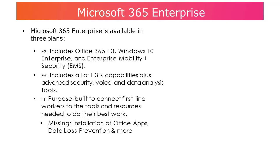The last plan is the F1, which is for first-line workers or field workers. These are users who usually do not spend their day in front of a computer and only use one when needed. It's also a lot cheaper than an E3 or E5 license; however, it's missing some features, such as being able to install Office on a computer. Those users can still use Office Online, but simply cannot install the full client locally on a PC.